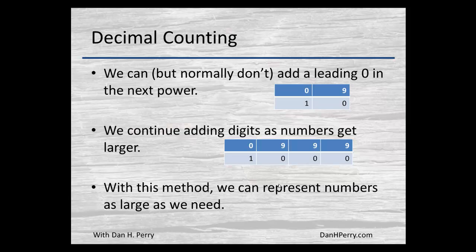If we're counting as digits get larger, if we've got 9, 9, 9 and add 1 to it, well in the ones bit on the rightmost, the 9 plus the 1 gives us a 0 with a carry. That carry is added to the